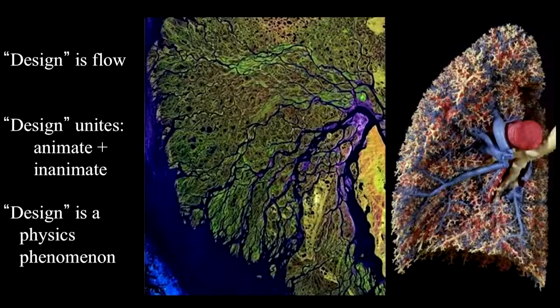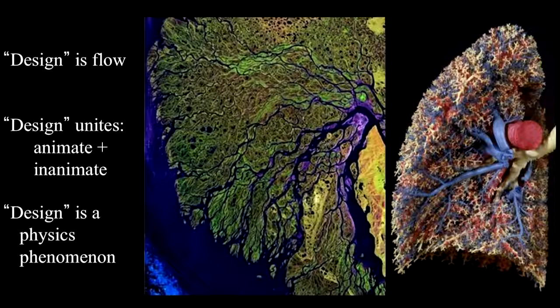Design happens when something is flowing, and at the same time that something is free to morph, like the channel of a river. This phenomenon — design — unites the animate with the inanimate, the river delta with the human lung.